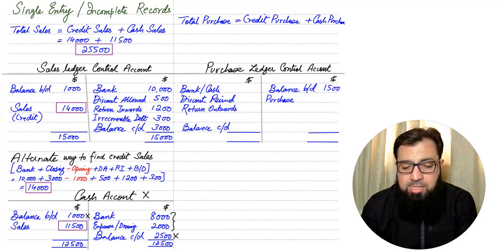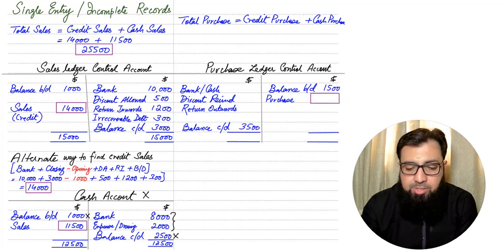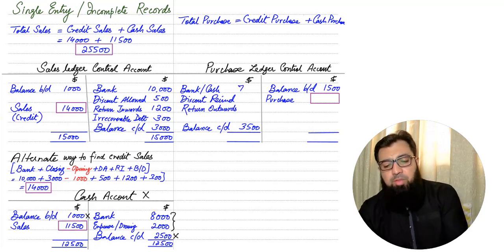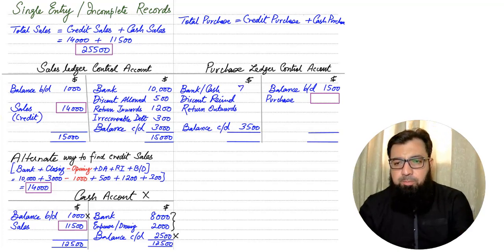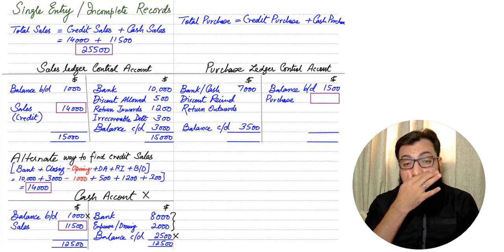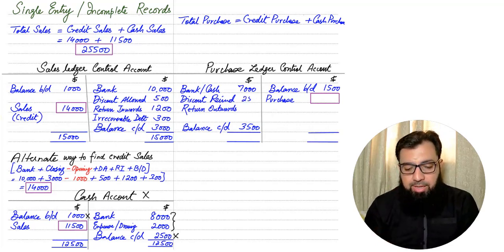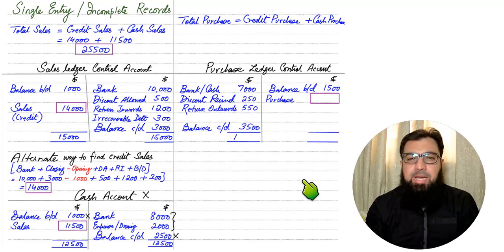Using some dummy values: the trade payable balance at the start of the year is 1,500 and at the end of the year is 3,500, and we need to find the purchase figure. We have paid our suppliers 7,000 — this reduces our liability. We also have Discount Received of 250 dollars, which also reduces the liability.